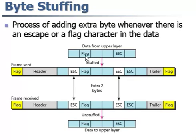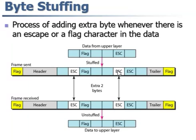Next, byte stuffing. Byte stuffing means the process of adding extra bytes when there is an escape or a flag character in the data. Here, as you see, there is a flag and escape character, so what you do is add an extra byte — an escape byte. When the control moves through the data and finds the escape byte, it escapes the next byte, going directly past it. This escape bit is added for that purpose. This is the sending part; this is the receiving part — what is sent is received in the same fashion.